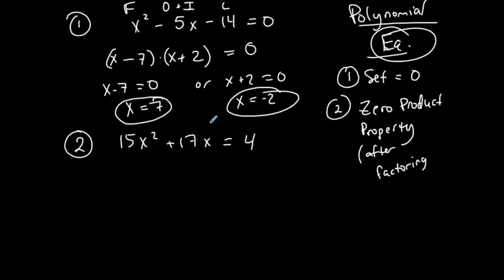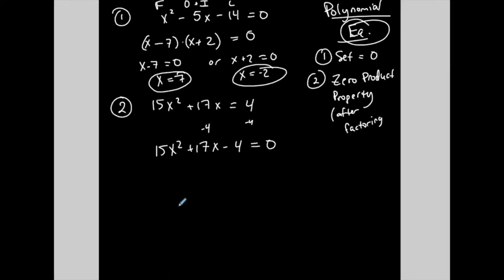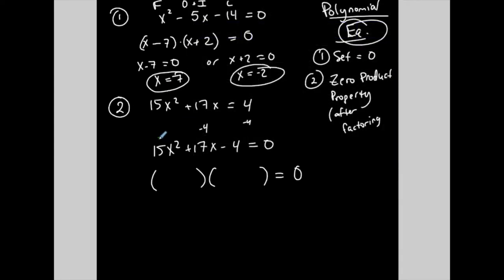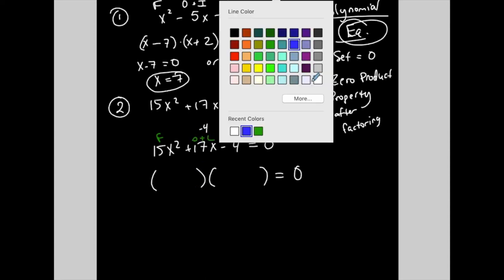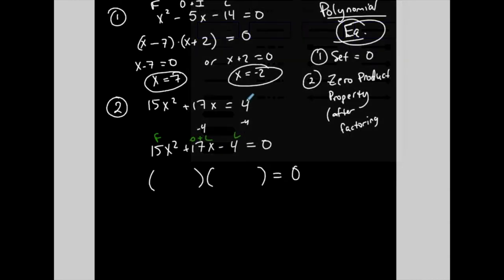Let's do this next one. Notice that the right-hand side does not have a zero, so I'm going to subtract 4 from both sides. Now I have 15x² + 17x - 4 = 0 — zero on the right-hand side. Now I see a trinomial in standard form, which I'm going to try to factor using my trial and error method. Remember, this is the F part of FOIL, this is the L part, and this is the outer plus the inner. I'm going to play with numbers a little bit and see if I can get it to work.